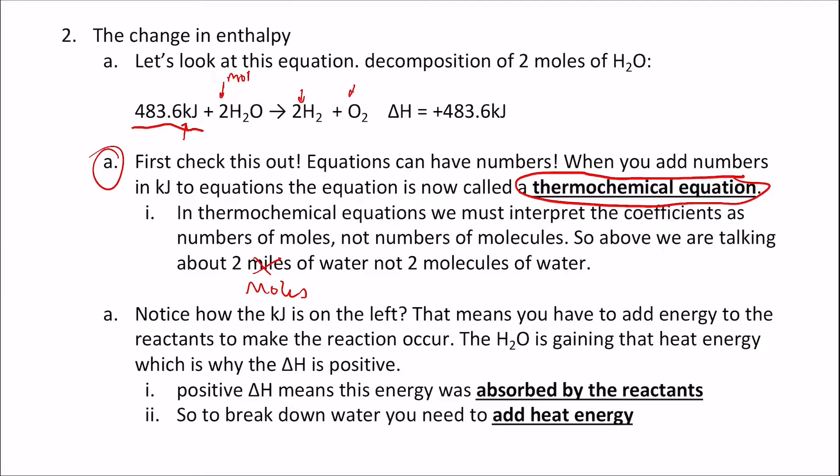Notice how the kilojoule is on the left. That means you have to add energy to the reactants to make the reaction occur. The water is gaining that heat energy, which is why delta H is positive. So to make this work, you have to put energy in. Positive delta H means this energy was absorbed by the reactants. So to break down water, you need to add heat energy.